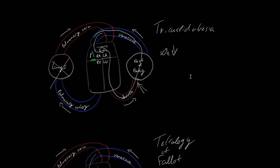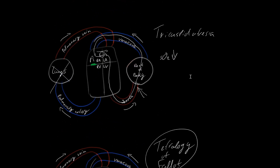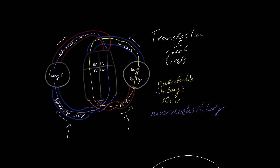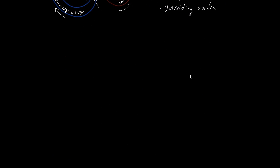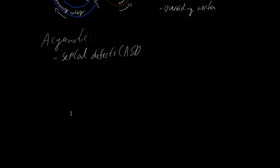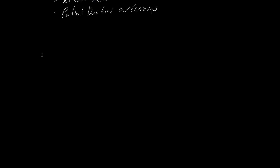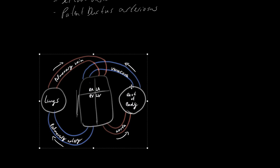So those were our four cyanotic heart diseases: tetralogy of Fallot, tricuspid atresia, transposition of the great vessels, and truncus arteriosus. Now moving to acyanotic heart diseases — the septal defects, which may be an atrial septal defect, a ventricular septal defect, or an atrioventricular septal defect — and the patent ductus arteriosus. Let's see how septal defects cause a left-to-right shunt.